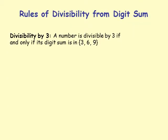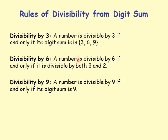To restate the divisibility rules: divisibility by 3 — digit sum is 3, 6, or 9. Divisibility by 6 — digit sum is 3, 6, or 9 and the number is even. Divisibility by 9 — digit sum is 9.